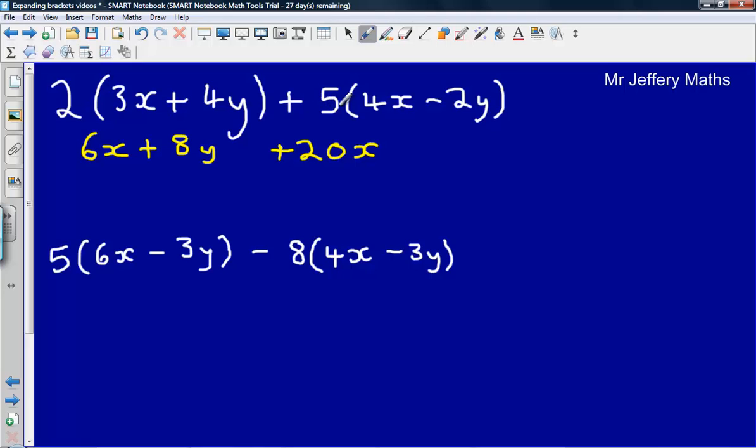Then we've got plus 5 multiplied by minus 2y, that leaves us with minus 10y. So that's our first step. This is our expanding part. We've expanded here.